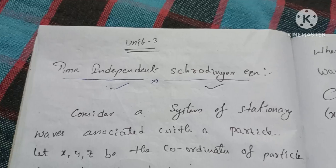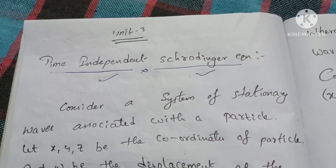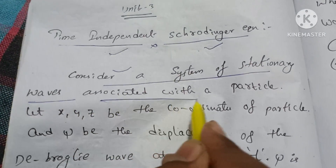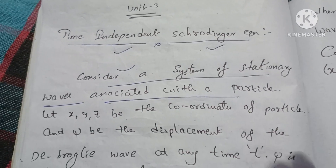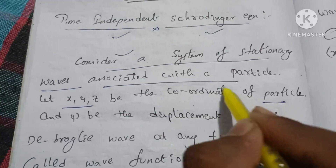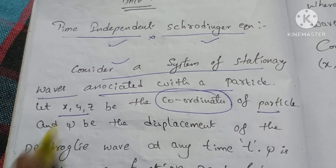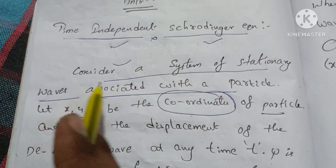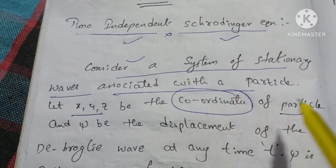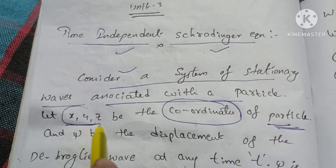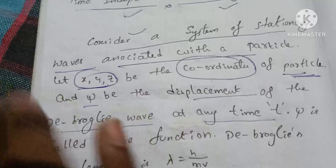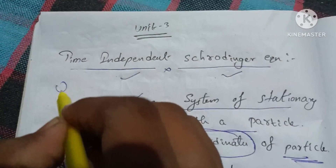So it's easy to find the notes. Consider this system of stationary waves associated with a particle. If a particle is associated with stationary waves, and the particle is connected to the coordinates x, y, z — you can find coordinates x, y, z and psi, which is the displacement of the de Broglie wave at any time t. This symbol is psi.